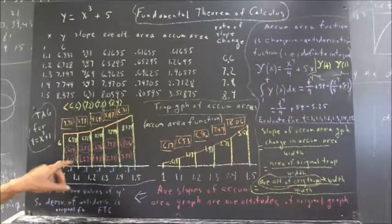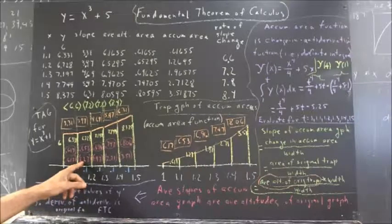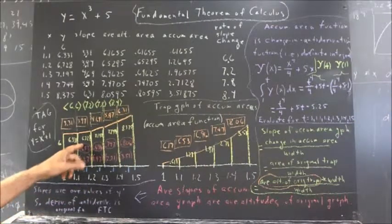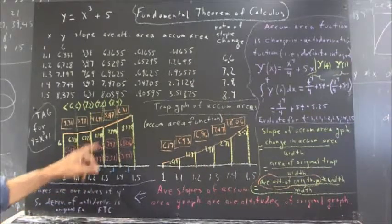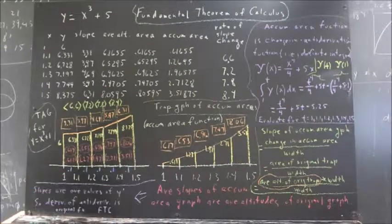In other words, we have area 0.617 accumulated up to this point. To get to 1.27 we added this area to get this, and then to this we added this area to get this, and so forth.